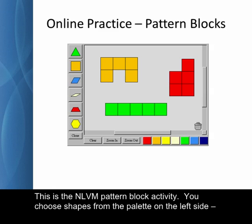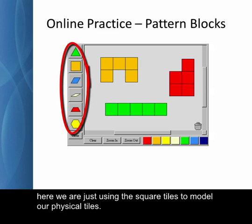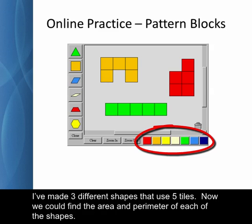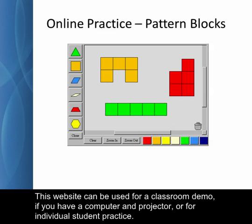This is the NLVM pattern block activity. You choose shapes from the palette on the left side. Here we're just using the square tiles to model our physical tiles. You can change the colors by clicking on the palette at the bottom. I've made three different shapes that use five tiles. Now we could find the area and perimeter of each of the shapes. This website can be used for a classroom demo if you have a computer and projector or for individual student practice.